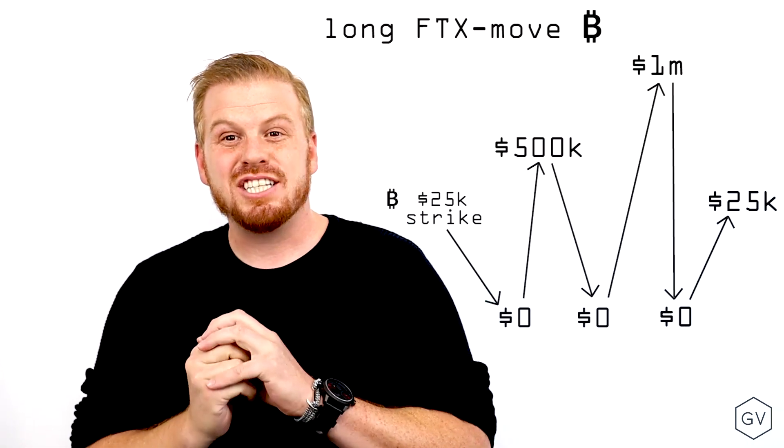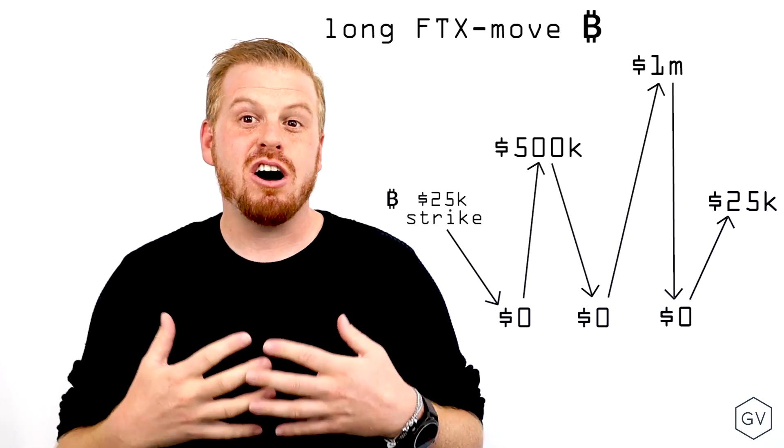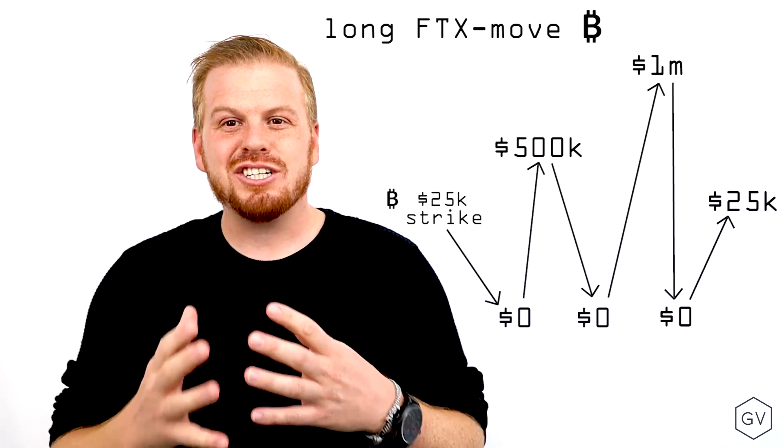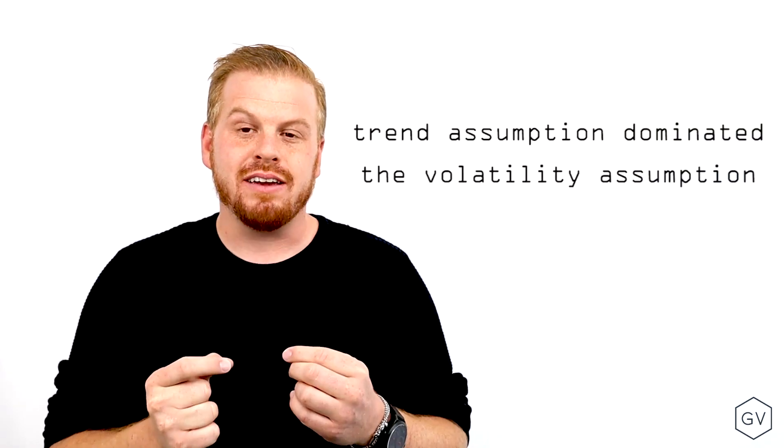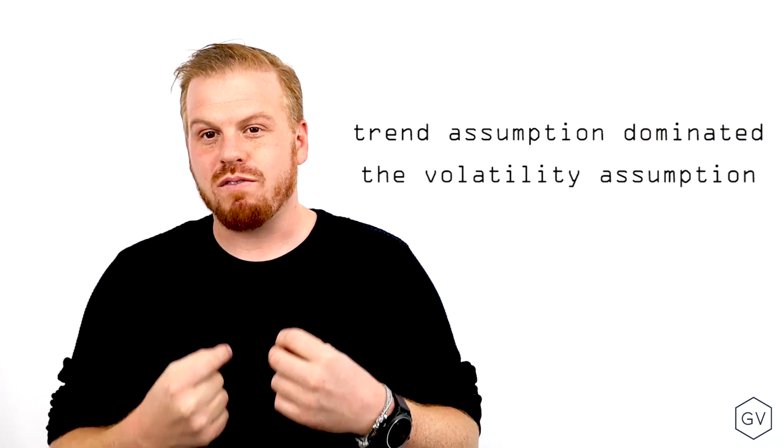you would have mean reverted perfectly from the start to the beginning, you would have seen extreme volatility that's essentially unheard of, and actually lost money on your move contract because you were wrong about the trending versus mean reverting assumption.